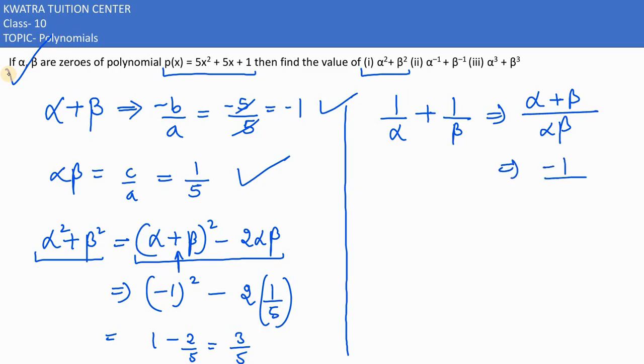Alpha plus beta ki jaga minus 1, alpha dot beta ki jaga 1 by 5. Take minus 5 to the numerator.